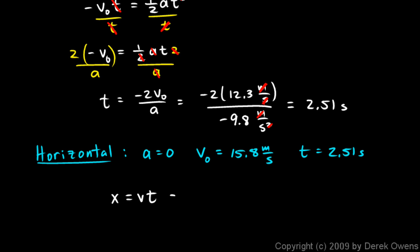X equals vt. And put in the numbers. 15.8 meters per second times 2.51 seconds. The seconds cancel. And I get 40 meters.